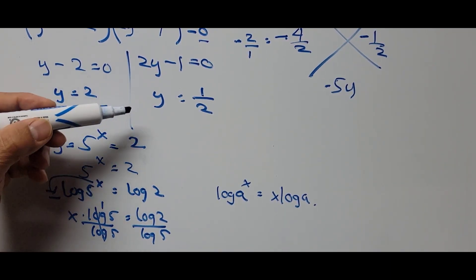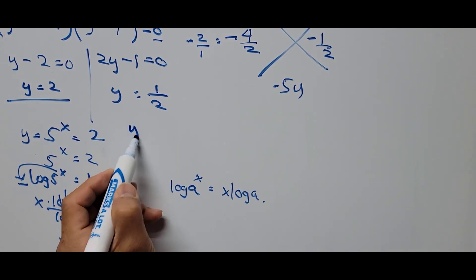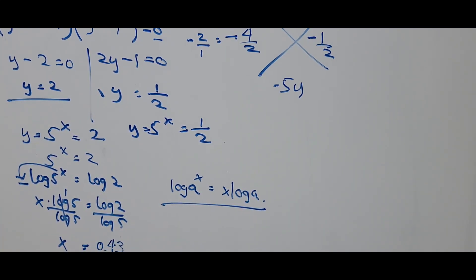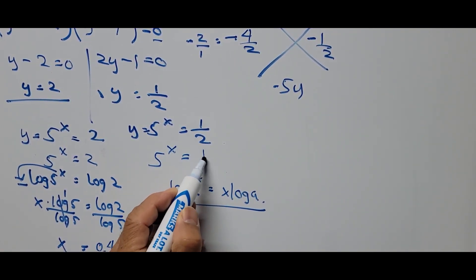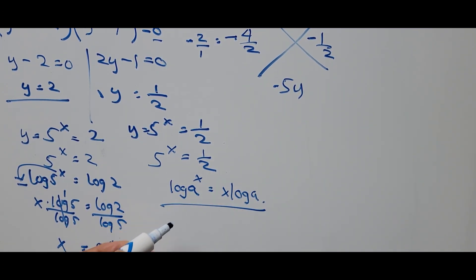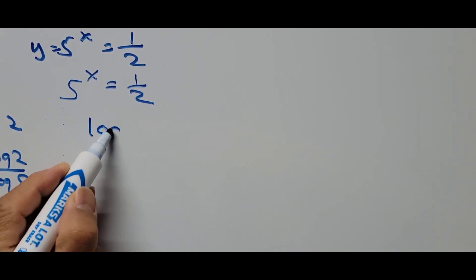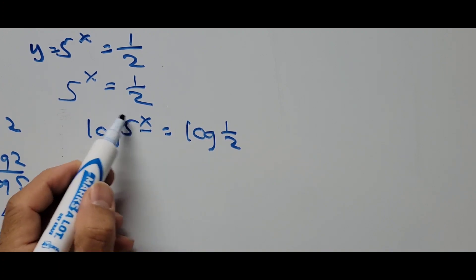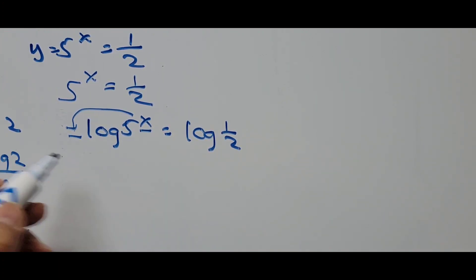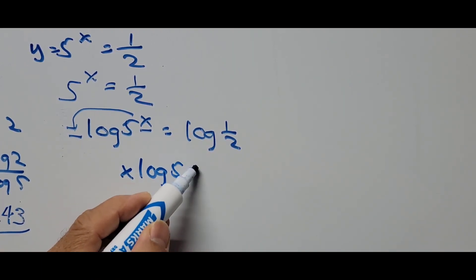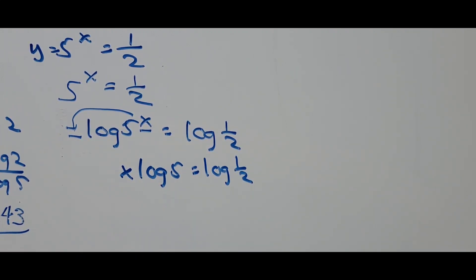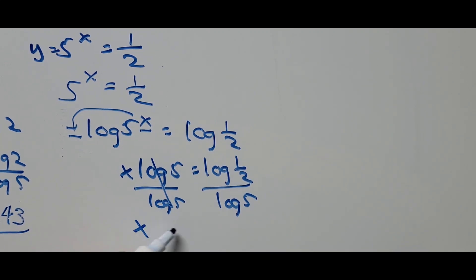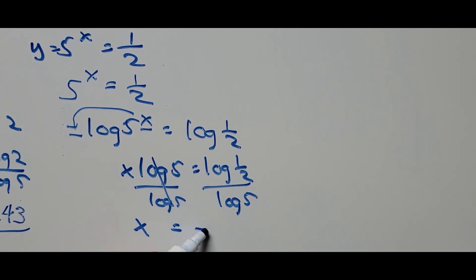For the other value, y equals one half: 5 to the power x equals one half. Taking the log of both sides: log of 5 to the power x equals log of one half. Transposing the exponent as a coefficient: x times log of 5 equals log of one half. Dividing both sides by log of 5, x equals log of one half divided by log of 5, which is approximately negative 0.43.